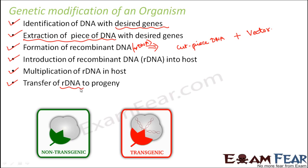Any organism which gets genetically modified is known as transgenic — an organism which has been genetically modified by introduction of a foreign gene inside its body. An organism which is not genetically modified is non-transgenic. In this picture you can see transgenic cotton: this cotton plant has been genetically modified so that it can protect itself against insects and pests. And this is the non-transgenic type of cotton.